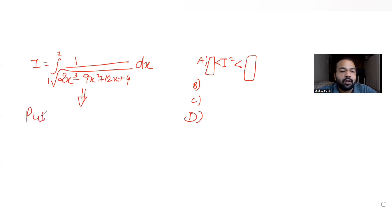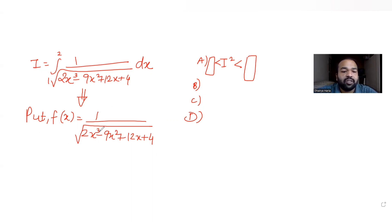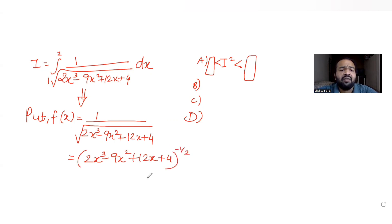We'll keep f(x) as the entire function, that is 1 upon root of 2x³ minus 9x² plus 12x plus 4. This is our entire function. Now to solve this further, I can find the derivative. I can write the function as (2x³ minus 9x² plus 12x plus 4) raised to minus half.